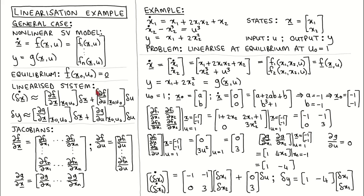For this Jacobian, which is rewritten over here, we have to calculate the derivative of function f1 and f2 with respect to the input u, which results in this column vector. After evaluating it at the equilibrium, we get this constant column vector.